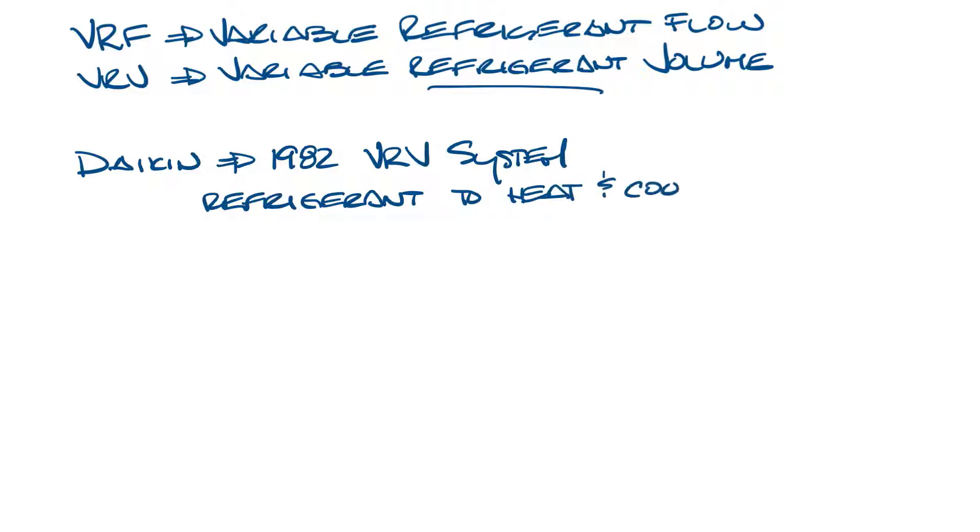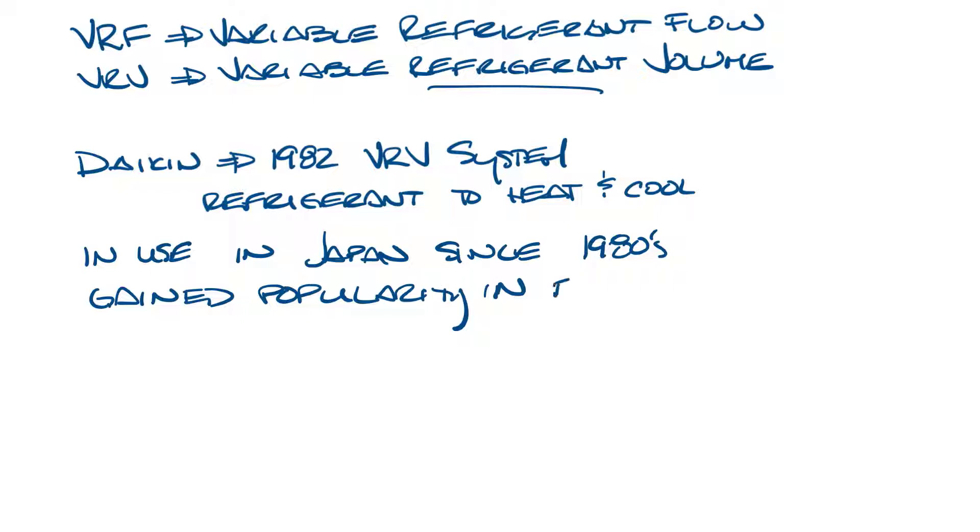VRF systems use refrigerant as the cooling and heating medium. VRF systems have been in use in Japan since the 80s and are widely used in Europe and Asia in commercial buildings. In the US, we didn't really start seeing VRF until the early 2000s and interest has been steadily growing.